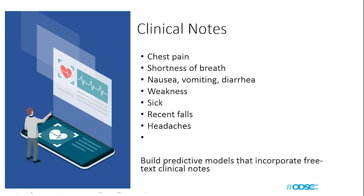For example: chest pain, shortness of breath, nausea, vomiting, diarrhea, weakness, sickness, recent falls, headaches — these are all symptoms that people experience that you can't actually measure or put numerical values to. So as a data scientist, we need to figure out how to capture this information. One of those ways is through clinical notes. The purpose of my workshop is really to add a tool to a data scientist's toolkit: how do we build predictive models that incorporate free text clinical notes?